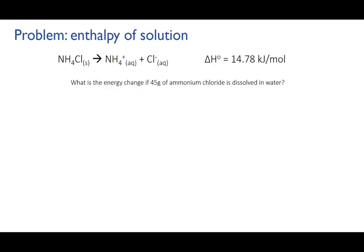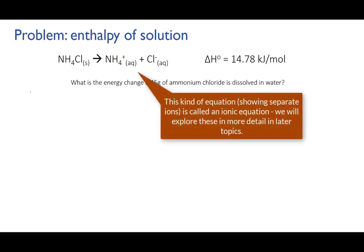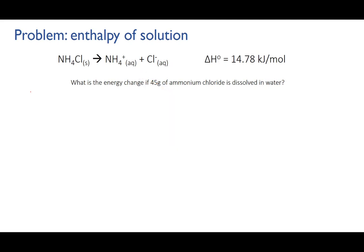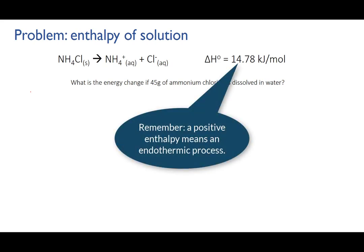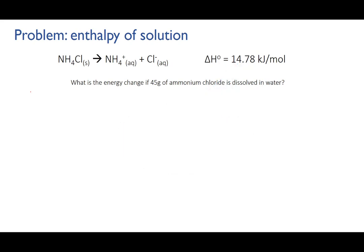Let's try a problem to do with enthalpy of solution. I have a reaction equation here. On the left, you can see we've got ammonium chloride solid, and on the right of the equation I'm showing the two ions that the ammonium chloride is made up of — the ammonium and the chloride — both shown with the subscript aqueous, meaning that the ammonium chloride solid has dissolved in water, the ions have separated, and we now have an aqueous solution. That has an enthalpy associated with it: 14.78 kilojoules per mole. The question is: what will the energy change be if 45 grams of ammonium chloride is dissolved in water?